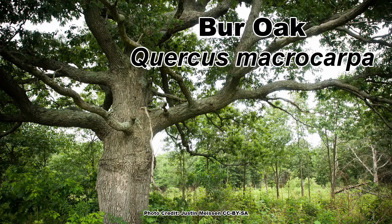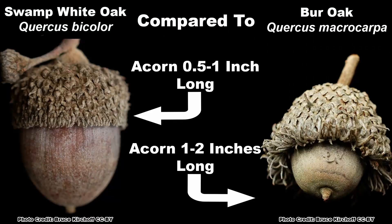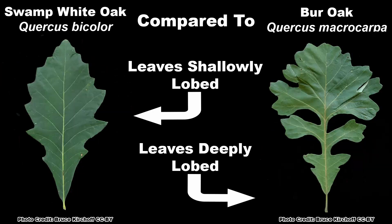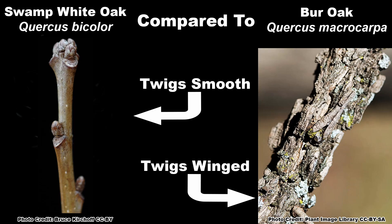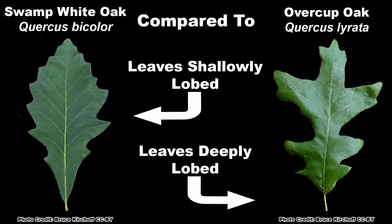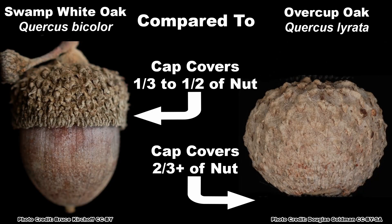There are several species that may cause confusion when identifying swamp white oak. Mainly burr oak, Quercus macrocarpa, which has a much larger acorn with a very noticeable and distinctive fringe on the cap, has deeply lobed leaves, and also has winged twigs. The overcup oak, Quercus lyrata, which has deeply lobed leaves and an acorn that has a cap covering two-thirds or more of the nut.